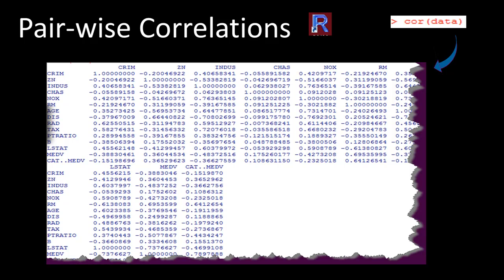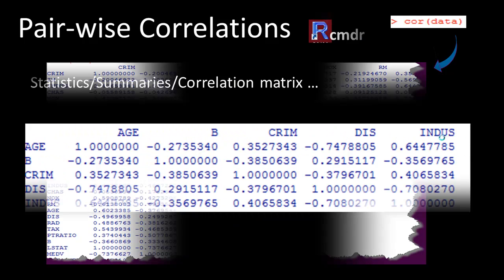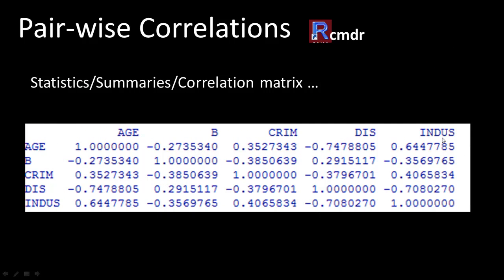In R, you can easily calculate the correlation coefficient. Let's say we have read in the Boston housing data and stored it in a variable called 'data'. You just do cor(data) and you get a complete report of the correlation coefficients for all pairs of variables.